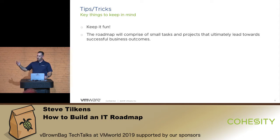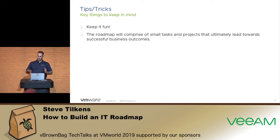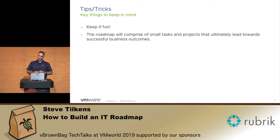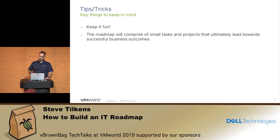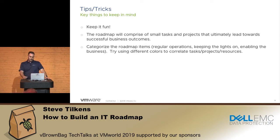The roadmap is going to comprise a lot of small tasks and projects, and ultimately that's going to support a much bigger goal. If you look at any one item — say, firmware upgrades — that's pretty tactical, not very strategic. But if you look at the roadmap as a whole, all the different items should ultimately lead to some much bigger strategic initiative. Going back to the workforce mobilization example: firmware upgrades may not sound related to that, but if that's followed by a Horizon upgrade and then a Workspace ONE deployment, ultimately the whole roadmap is supporting that initiative.